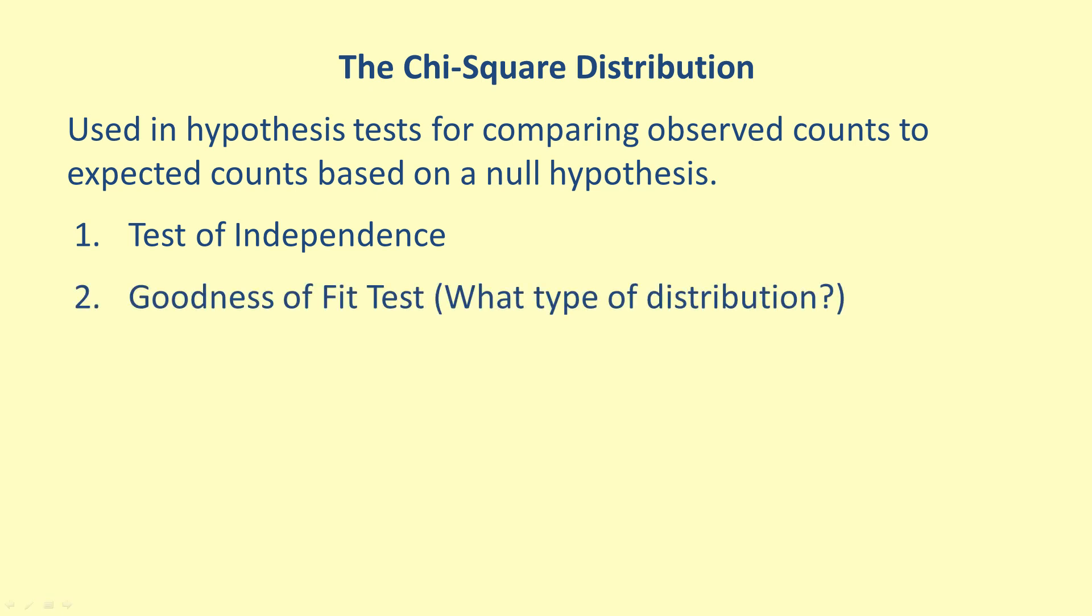The goodness of fit test is used to compare a distribution of counts for a categorical variable to the expected counts based on an assumed distribution. The test of homogeneity can be used to compare the two distributions of counts to see if they have a statistically significant difference.